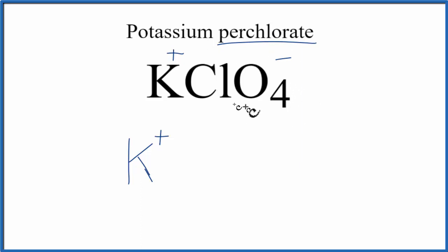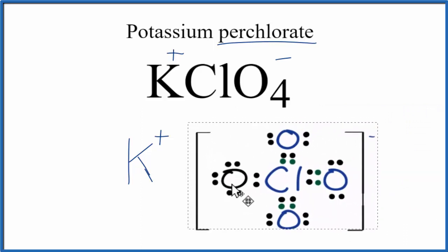They're all non-metals, so it's covalent. Rather than do that in this video, you can watch my other video for the Lewis structure for ClO4 minus. I'm just going to pull it in here and put it right like that.